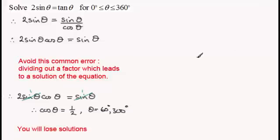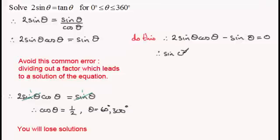So what do we do? Well at this stage here what I'd encourage you to do is to subtract sin(θ) from both sides. So you're therefore going to have 2sin(θ)cos(θ) minus sin(θ) equals zero. And then instead of dividing through by sin(θ), pull out sin(θ) as a common factor. So you end up with therefore sin(θ) multiplied by (2cos(θ) - 1) equals zero.